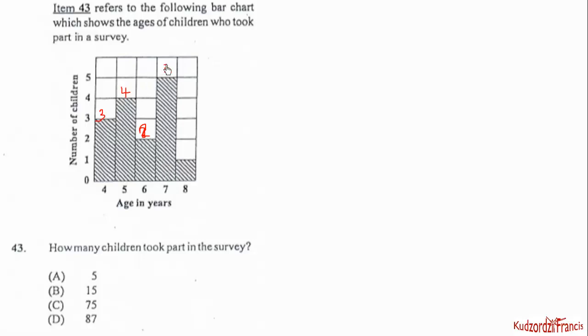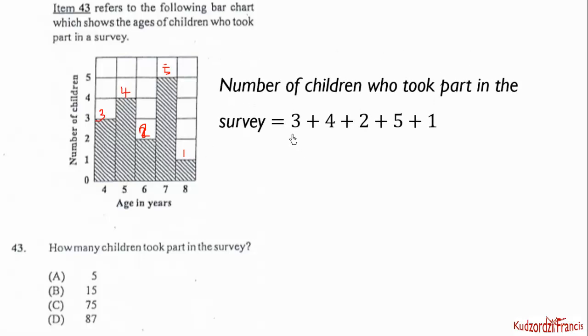When we add all the frequencies we get the total number of students who took part in the survey: 3 plus 4 plus 2 plus 5 plus 1 equals 15. So 15 children took part in the survey.